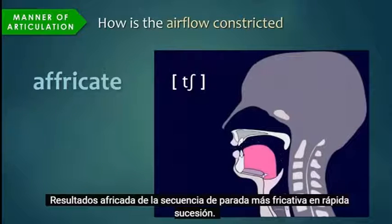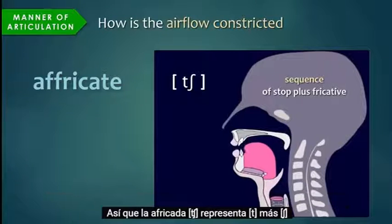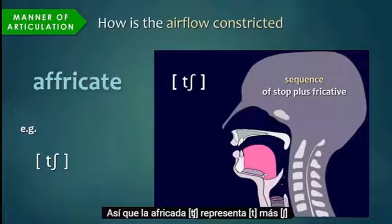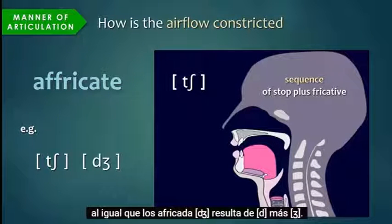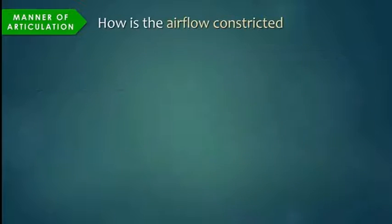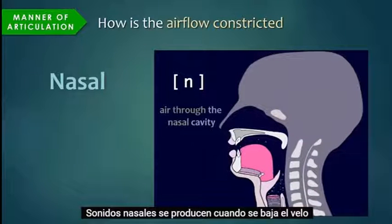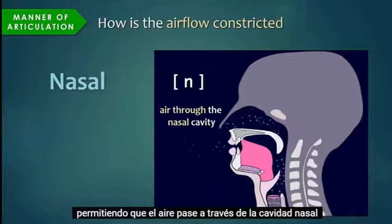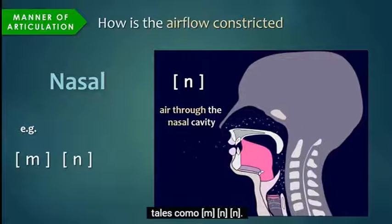Affricates result from a sequence of stop plus fricative in rapid succession. So the affricate ch represents t plus sh, just as the affricate j results from d plus zh. Nasal sounds are produced when the velum is lowered, allowing air to pass through the nasal cavity, such as m, n, ng.